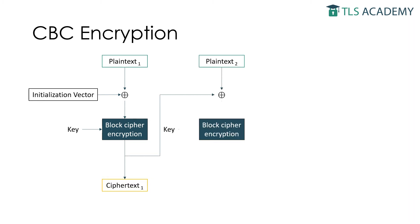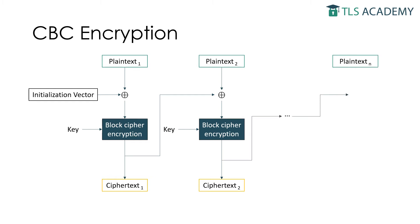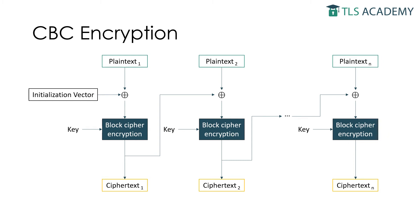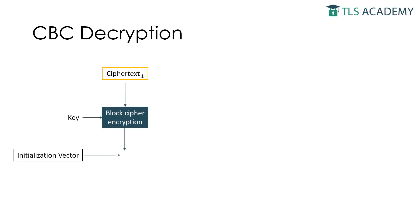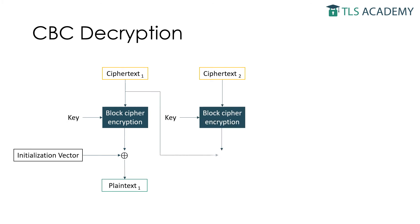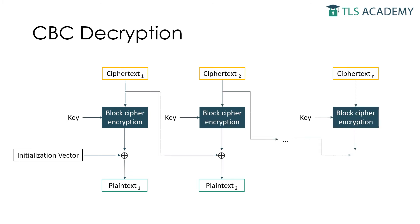In the next step, a second block of plaintext is linked via exclusive disjunction with the ciphertext of the first step. This process can be repeated any number of times, hence the name cipher block chaining. For the decryption, the cipher block has to go through the same number of steps as for the encryption. A plaintext block is calculated by exclusive disjunction of the ciphertext of the previous step and the block cipher decryption of a ciphertext block.